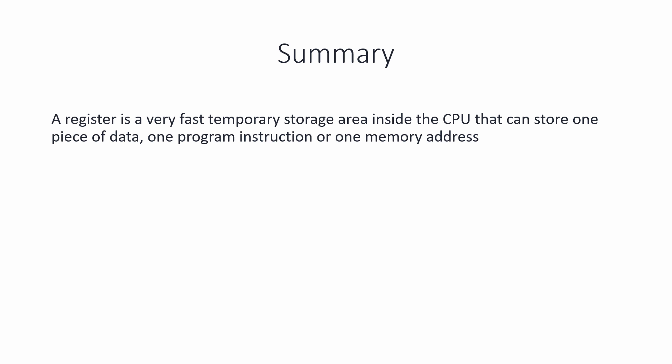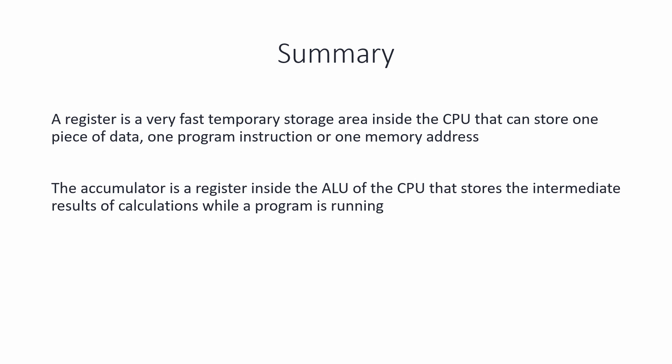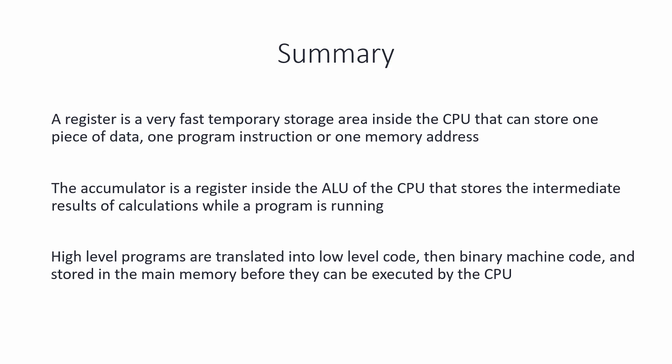Here's a summary of everything you've seen. A register is a very fast, temporary storage area inside the CPU that can store one piece of data, one program instruction, or one memory address. The accumulator is a special register inside the arithmetic and logic unit of the CPU that stores the intermediate results of calculations while a program is running — it does exactly what its name suggests: it accumulates values. High-level programs are translated into low-level code, then binary machine code, and stored in the main memory before they can be executed by the CPU.